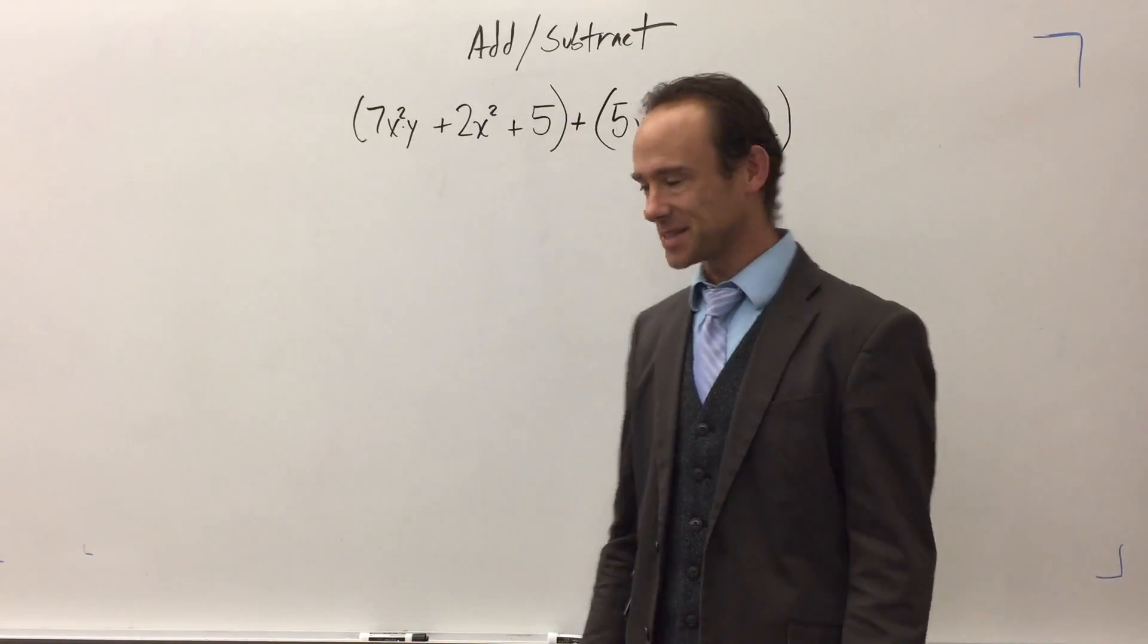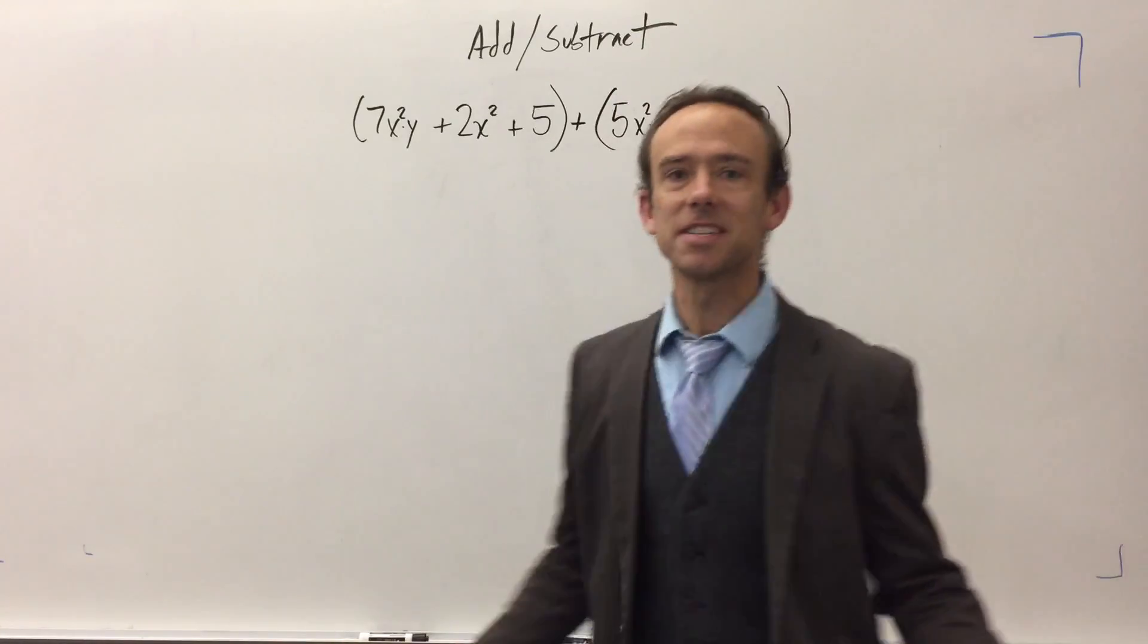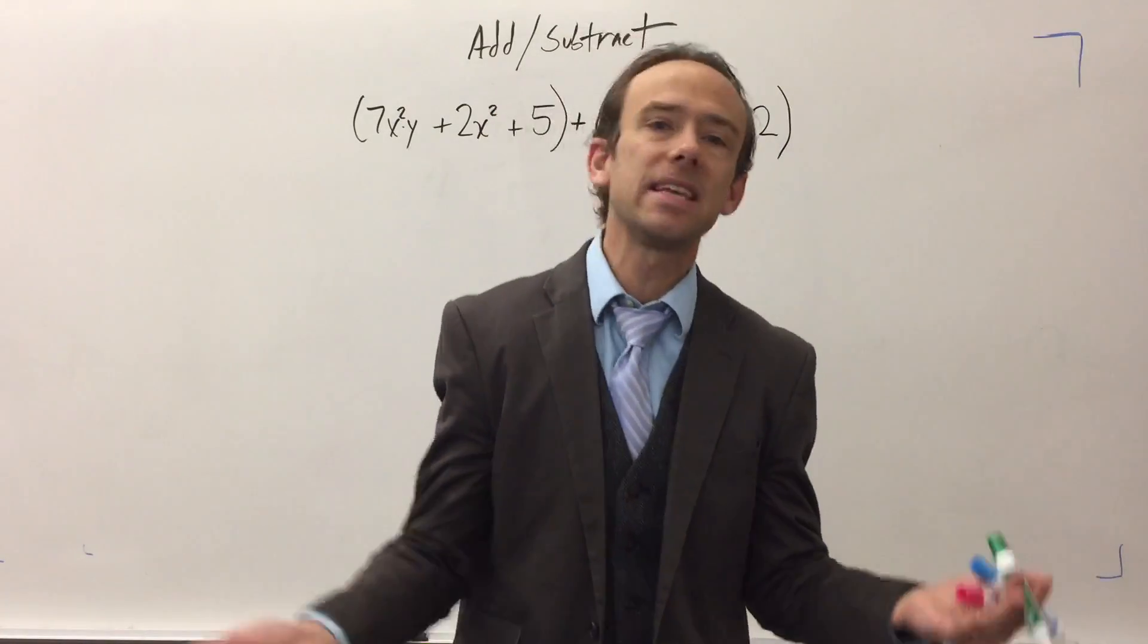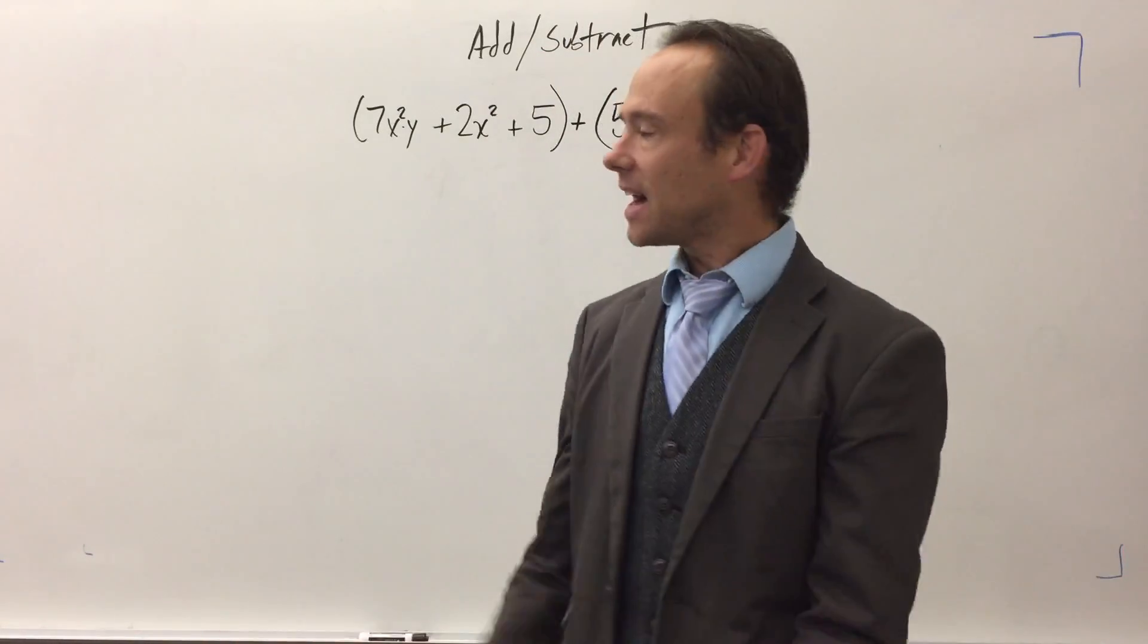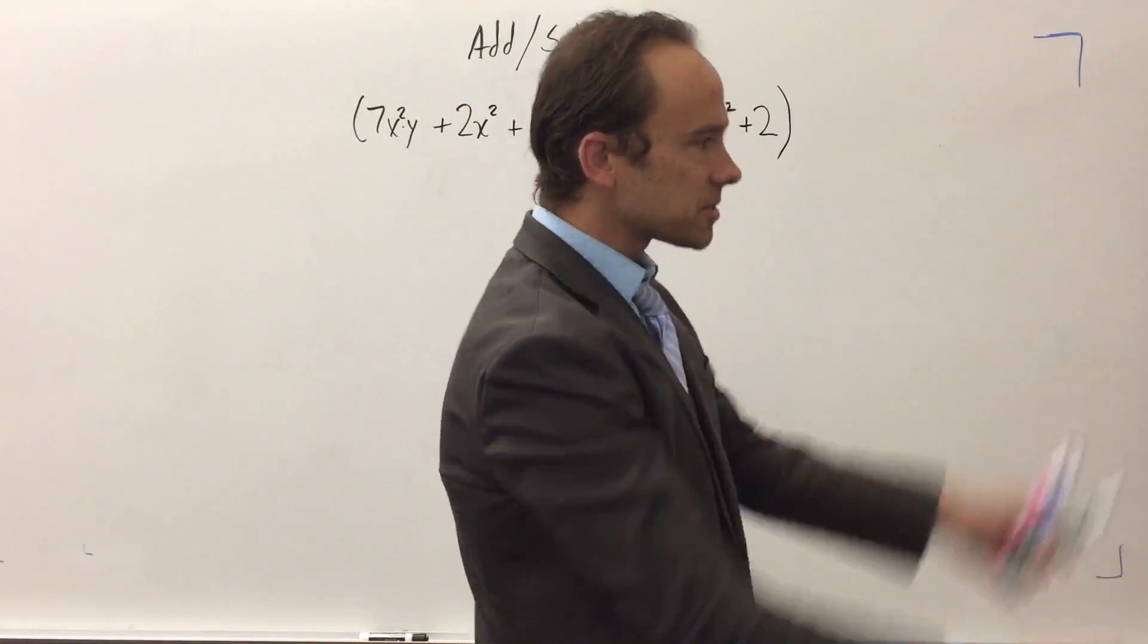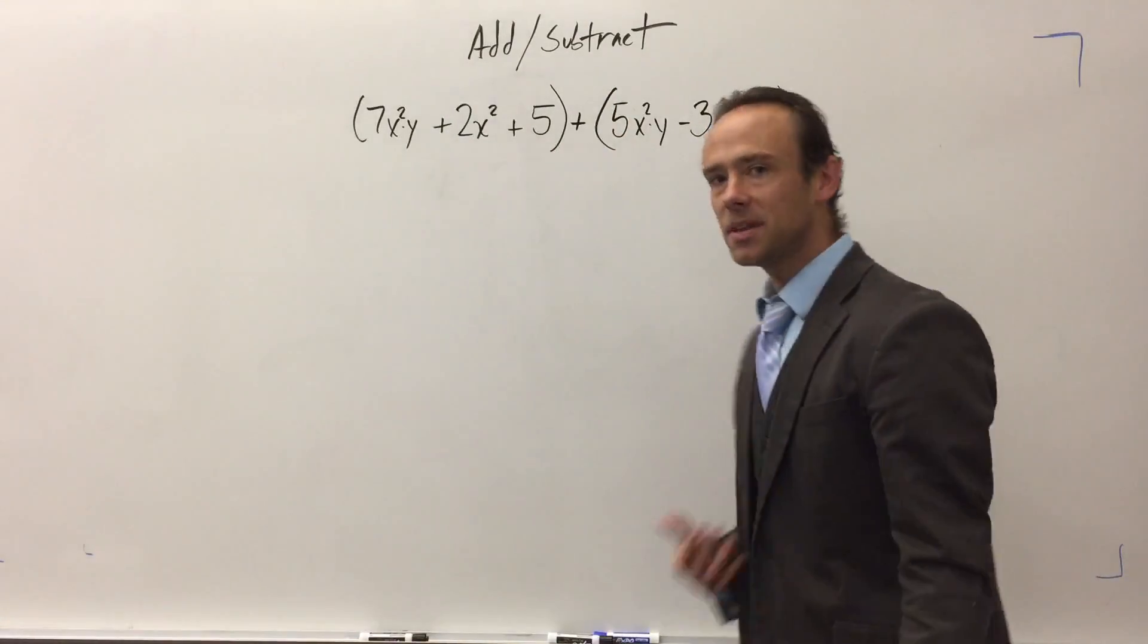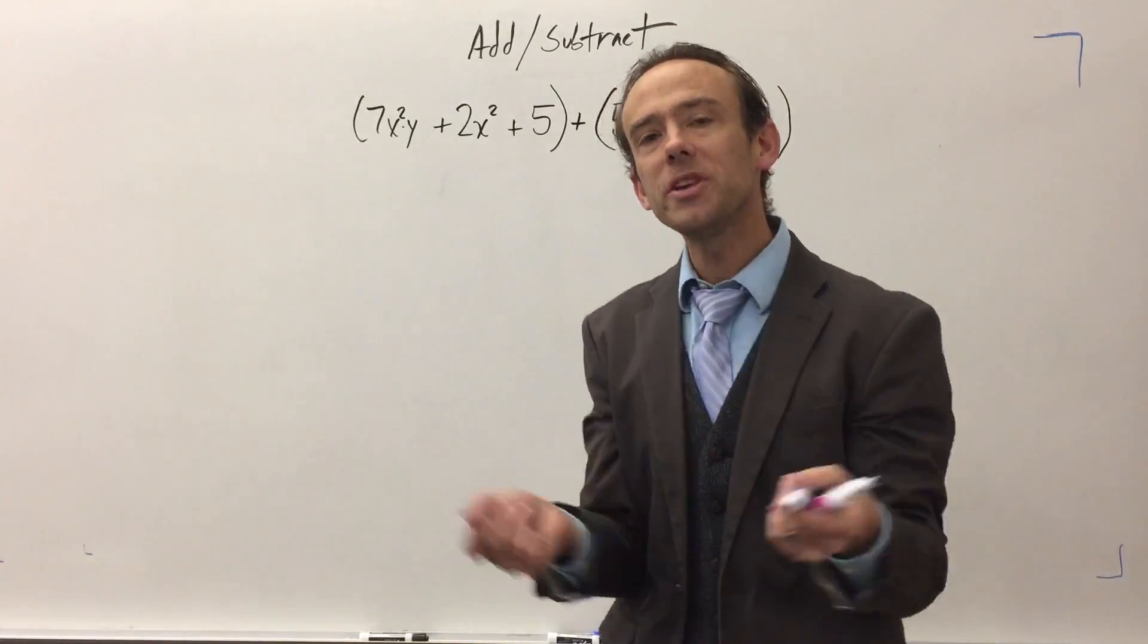All right, adding and subtracting polynomials. It's pretty much combining like terms. That's what it is. When you're adding and subtracting, really all you're doing is just counting how many of a certain thing you have. That's what adding and subtracting is. It's just counting. I have this many of those or I got this many of those. If I take away these, oh this is what I have remaining. And so when we're adding and subtracting like terms, it's important that we first decide what are our terms that we are to combine.